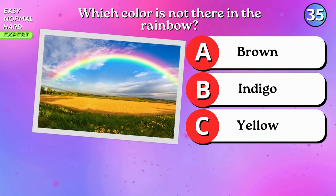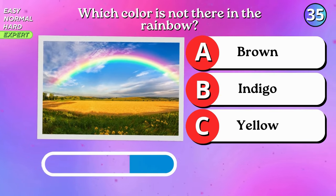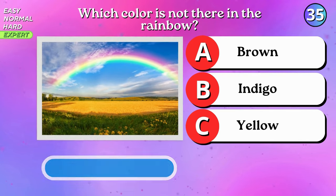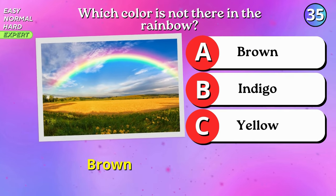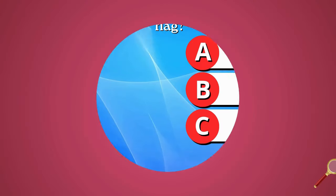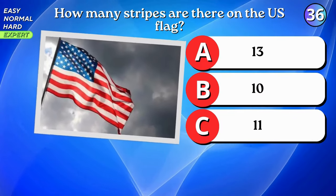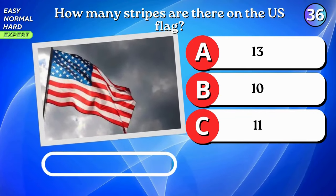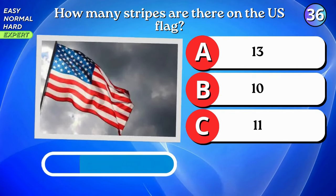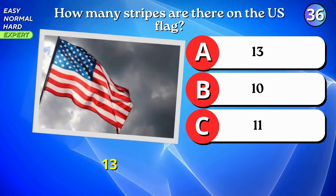Which color is not there in the rainbow? Brown. How many stripes are there on the U.S. flag? Thirteen.